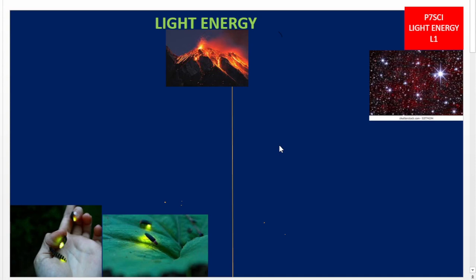We are going to start by understanding what the term light means. Light is a form of energy. In the previous sessions, we discussed energy and said that energy is the ability to do work.